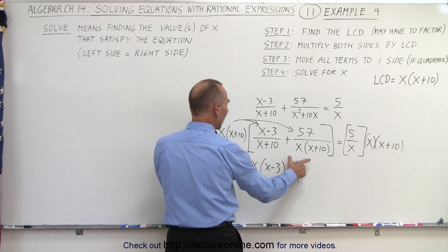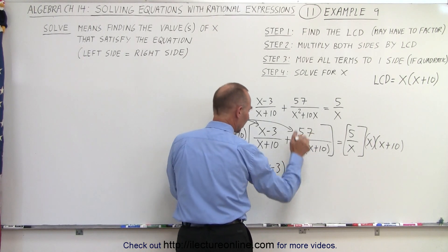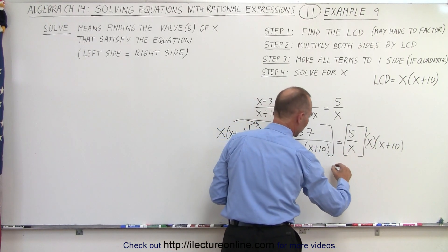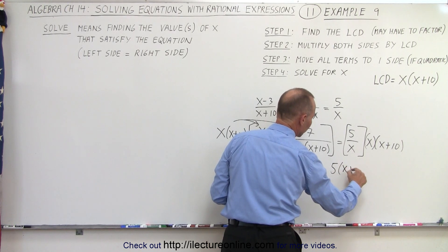Here, notice that both the x and the x plus 10 cancel out and we're left with a 57. Equals, here the x's will cancel out and we're left with a 5 times x plus 10.